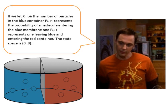If we let Xn be the number of particles in the blue container, P(i, i+1) represents the probability of a molecule entering the blue container. And P(i, i-1) represents one leaving the blue container and entering the red container. The state space is 0 to 8.